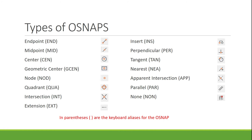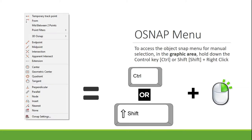OSNAPs are your object snaps, and you're going to use those if you want to get to a certain point. If I want to start a line from a midpoint, endpoint, or center of something, I'll use the OSNAPs as opposed to guessing where those are on screen. If you're a keyboard person, you can type the shortcut shown in parentheses while inside a command — for example, type E-N-D to get to the endpoint OSNAP. You can also hold down Shift and right-click to bring up the OSNAP menu and select from it.